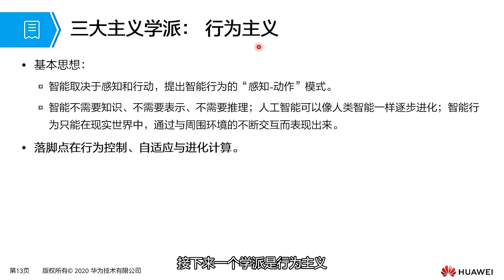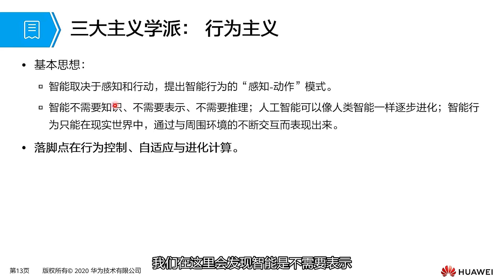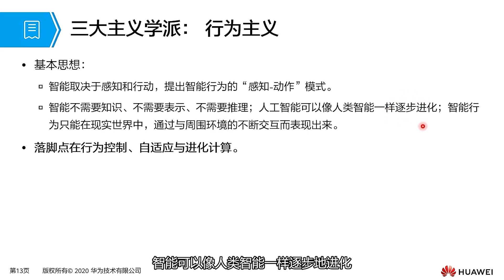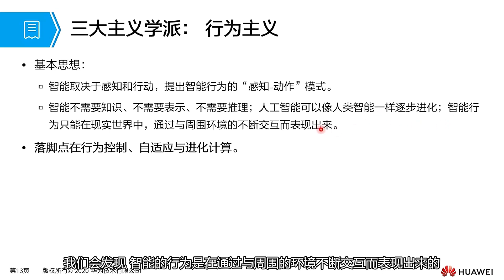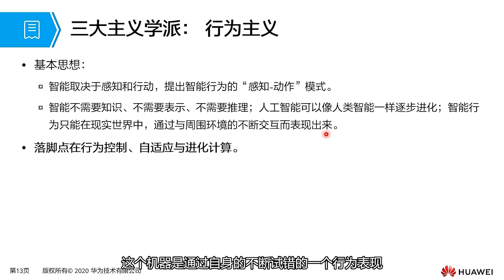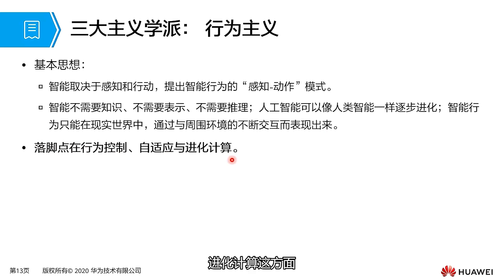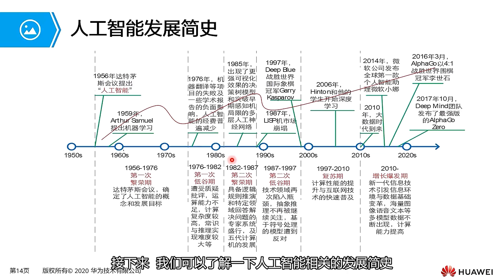Another school of thought is behaviorism. The idea of behaviorism is that intelligence depends on perception and action — intelligent behavior is a process of reacting and responding through external perception. Intelligence does not need representation, knowledge, or inference; AI can evolve gradually like human intelligence through continuous interaction with the surrounding environment. Behaviorism can be understood as a machine demonstrating behavior through continuous trial and error. Its focus is on behavior control, adaptive and evolutionary computing.